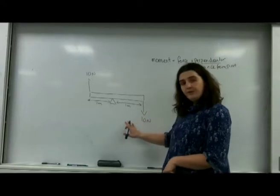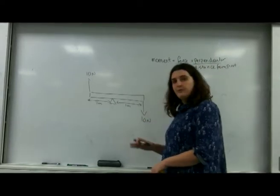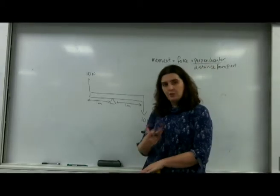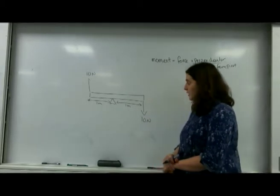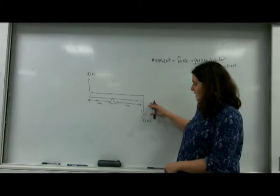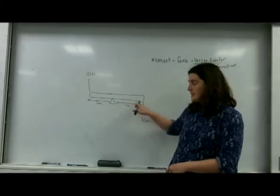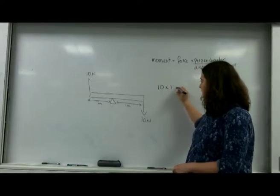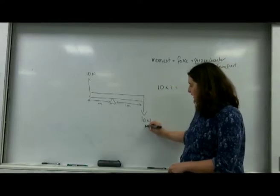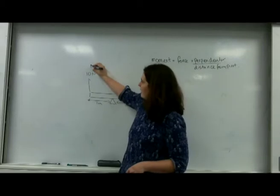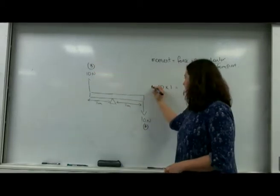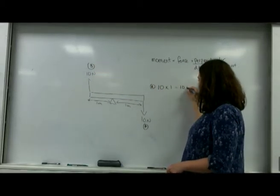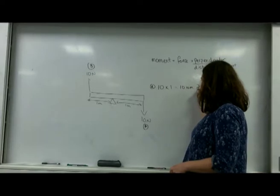How I find the overall moment of a diagram is I take each object on its own. So this 10 newtons here, the perpendicular distance is 1, so I've got 10 times 1. I'll call that A, I'll call this B. This is A, and that's going to be 10 newton metres and it's going to be clockwise.